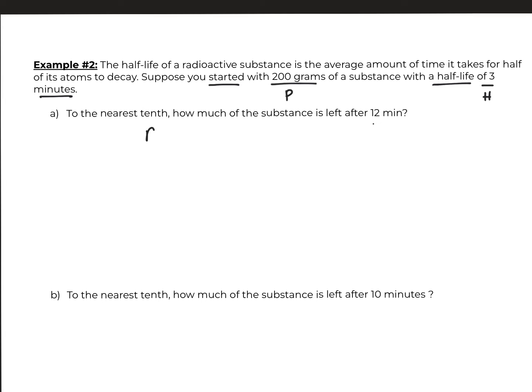Let's start with the formula. A equals P times 0.5 to the t over H. Since P is 200 and 0.5 stays, they want to know how much is left after 12 minutes. So your 12 minutes, your time is 12. The 12 goes on top and H, my half-life, is three.